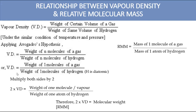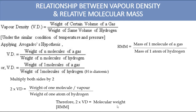Multiplying both sides by 2: 2 × vapor density = weight of one molecule of the gas divided by weight of 2 atoms of hydrogen, multiplied by 2. Cancelling the 2s gives weight of 1 atom of hydrogen in the denominator. This expression — weight of 1 molecule of the gas divided by weight of 1 atom of hydrogen — equals RMM. So 2 × vapor density = RMM, and we have derived the relation between vapor density and molecular weight.